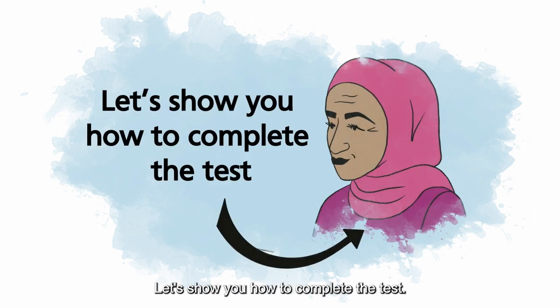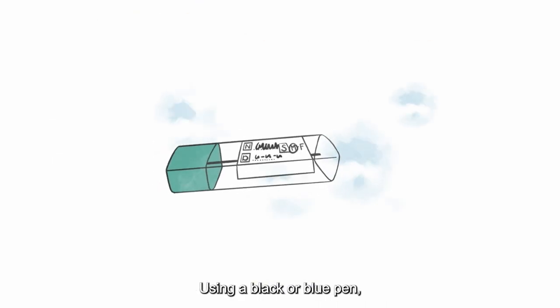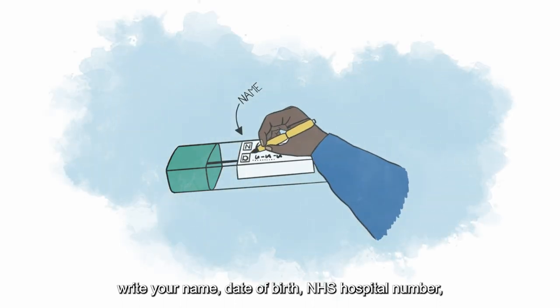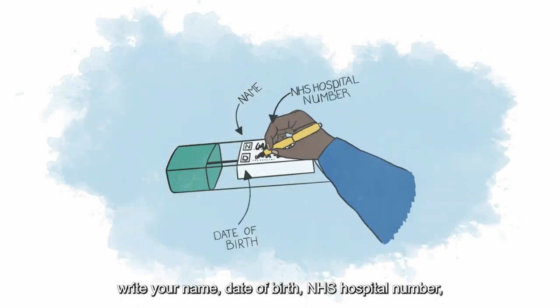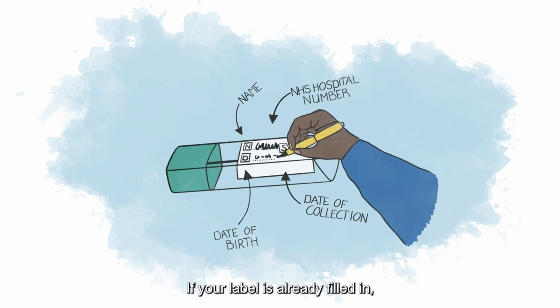Let's show you how to complete the test. Step 1: Label your sample. Using a black or blue pen, write your name, date of birth, NHS hospital number, and the date you collected your poo. If your label is already filled in, please check they are all correct.